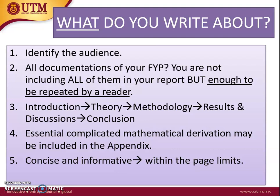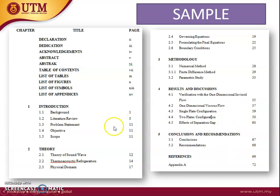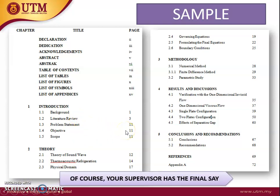Maybe more chapters if your supervisor advises it, but never less. Essential complicated mathematical derivations may be included in the appendix, but they must be referred to in the thesis itself; otherwise, they are not needed. The thesis write-up must be concise and informative, but within the page limits — about 100 pages, excluding the appendix. Note that for some supervisors, the theory is embedded in the methodology, and some supervisors prefer to separate the literature review and background into separate chapters. Your supervisor has the final say; this is just a guideline.